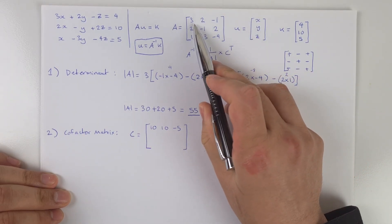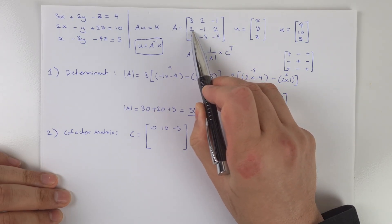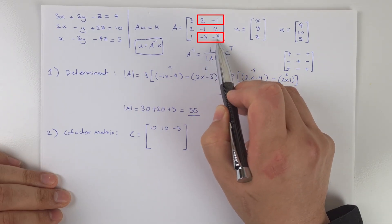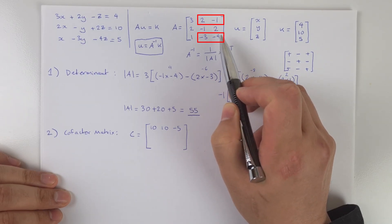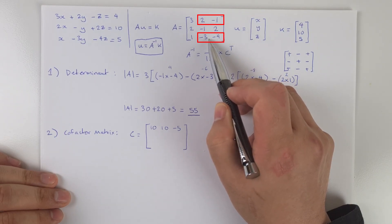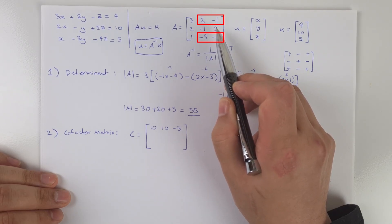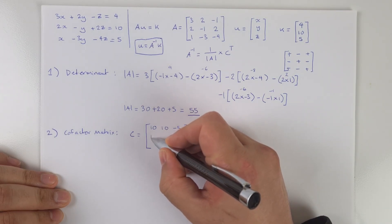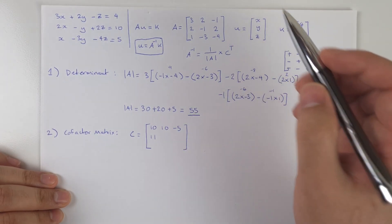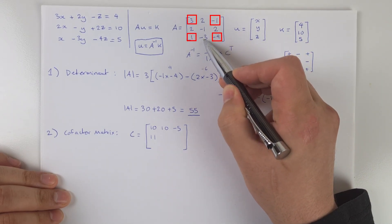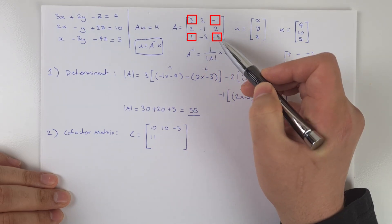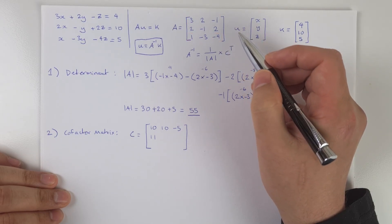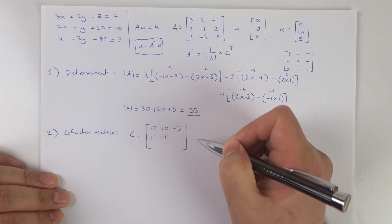For the second row of the cofactor matrix: starting from the first element of that row, crossing the intersecting row and column leaves entries 2, minus 1, minus 3, minus 4. That gives two times minus four minus minus one times minus three, which is minus eight minus three = minus eleven. Because there's a negative sign at this position, we multiply by minus one to get 11. For the next element, three times minus four minus minus one times one = minus 12 minus negative one = minus 11.